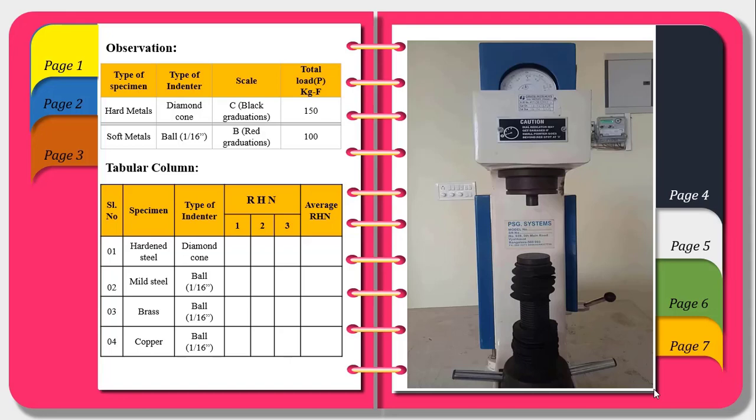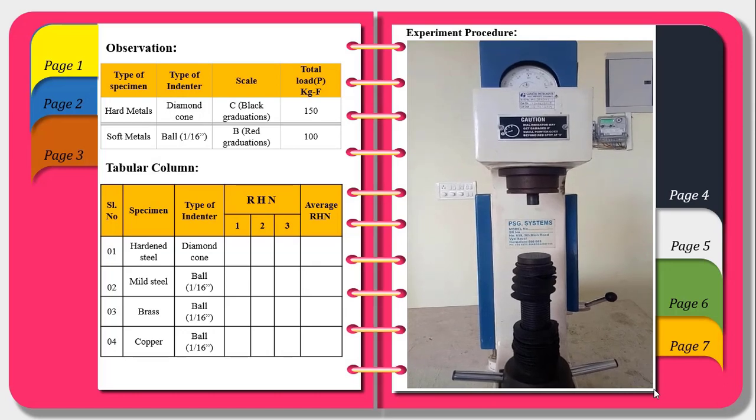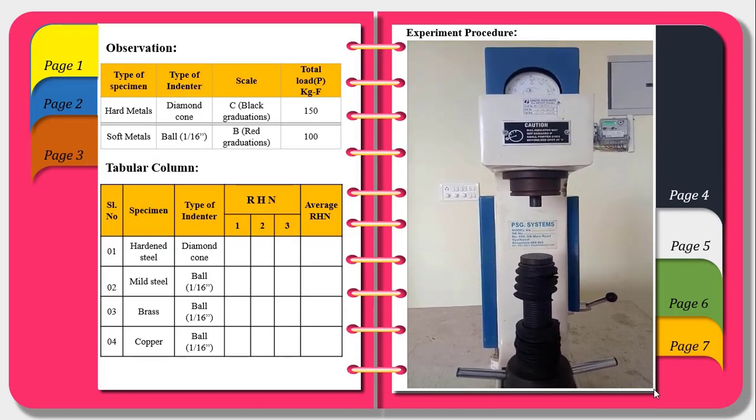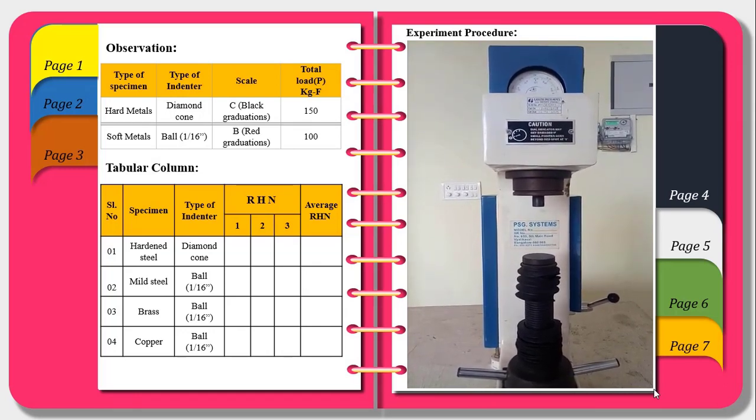For four different specimens the different types of indenters are used. And we are going to measure what is the average Rockwell Hardness number. This is the experimental setup used to determine the Rockwell Hardness number of a given specimen.